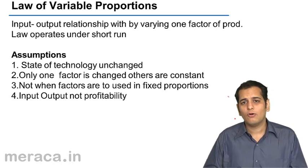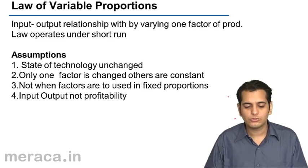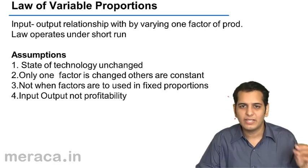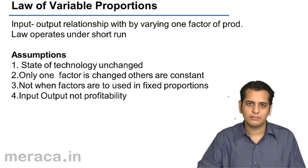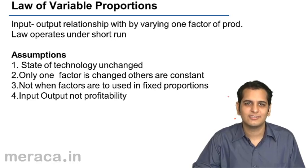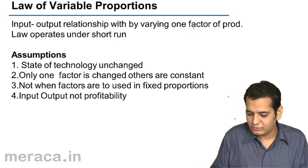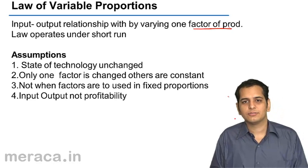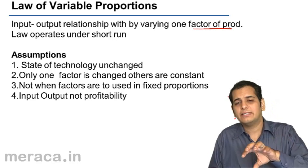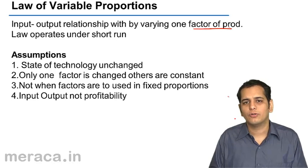What is the law of variable proportions? As the word 'variable' suggests, here we are concerned with varying something — changing something. In the law of variable proportions, we change the factor of production. By changing one factor of production, we observe what is the effect of that change on total output or total product.